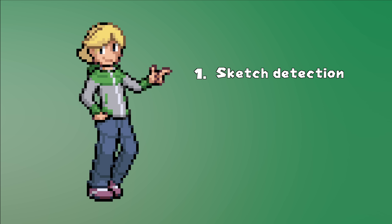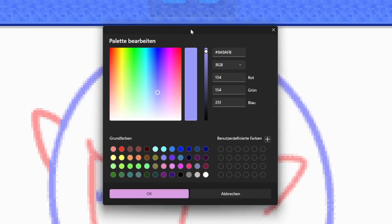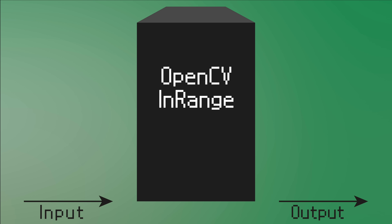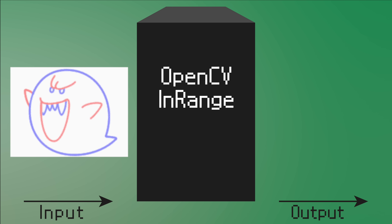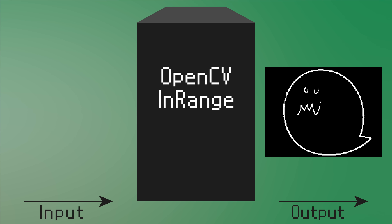The first part is easy enough. We can find out the RGB color of our part of the drawing and select similar colors with OpenCV. If you watched my other videos, you probably already know the InRange function. It takes an image, a lower and upper color bound, and returns a mask with all selected pixels. The result is an image that is white where our lines are and black everywhere else.